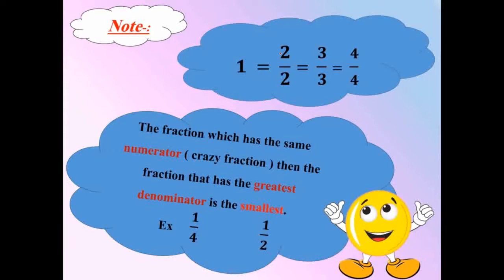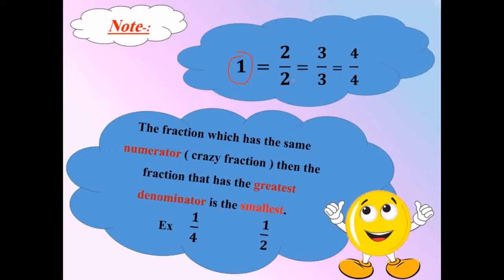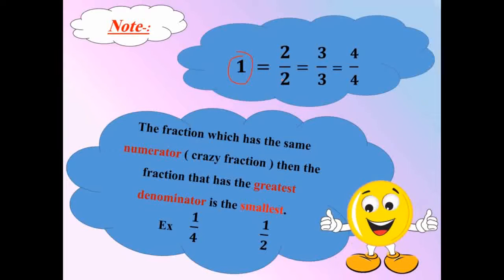Remember: two over two, three over three, or four over four are all equal to one. Any fraction where the two numbers — the numerator and the denominator — are equal means top equals bottom, and that equals one. Excellent.